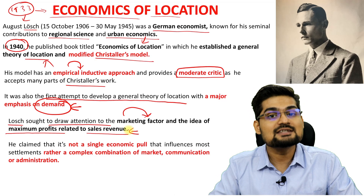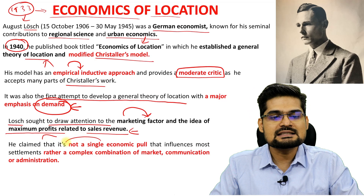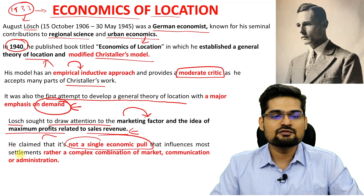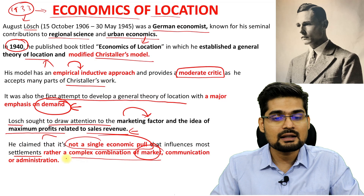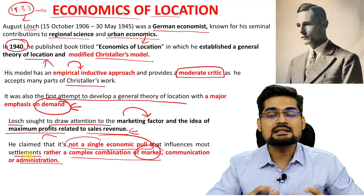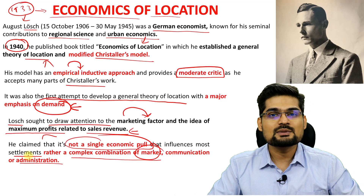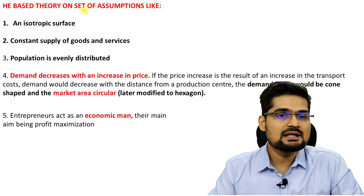He claimed that it is not a single economic pull — the centrality or central function of a place — that influences settlement. Rather, it is a complex combination of market, communication, administration, and many other factors that regulate the shape, pattern, or location of a particular settlement. That is why we say economics of location. He based his theory on a set of assumptions.